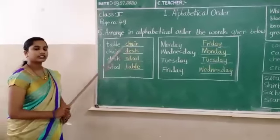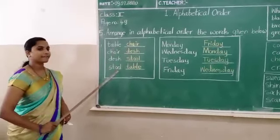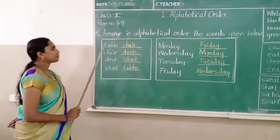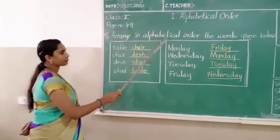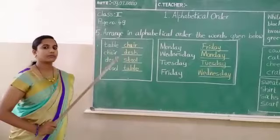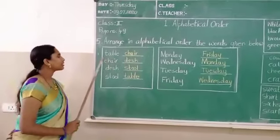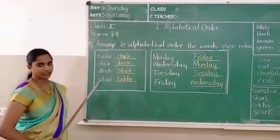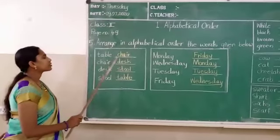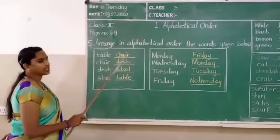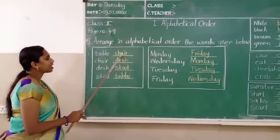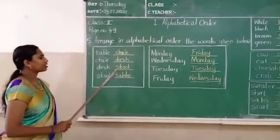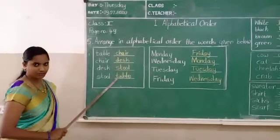What are these? These are furniture, that's good. So you should see, while writing alphabetical order, the first thing you should keep in mind is the first letter — which letter will come first. So C will come first, yeah? So chair, then desk, stool, table.